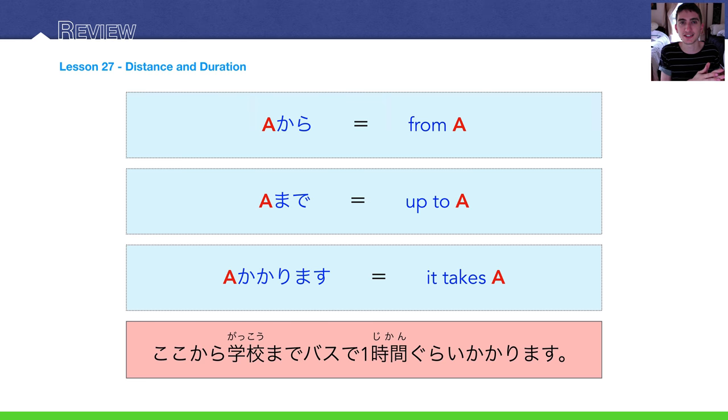Kakarimasu, e kakarimasu is a phrase that means it takes e. And e is some kind of time expression. It takes an hour, it takes 50 minutes, what have you.